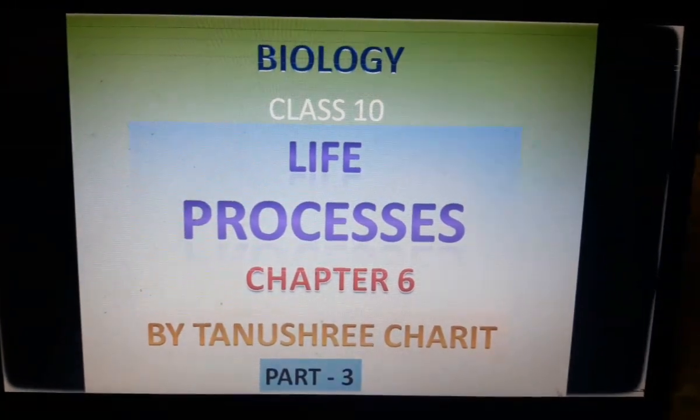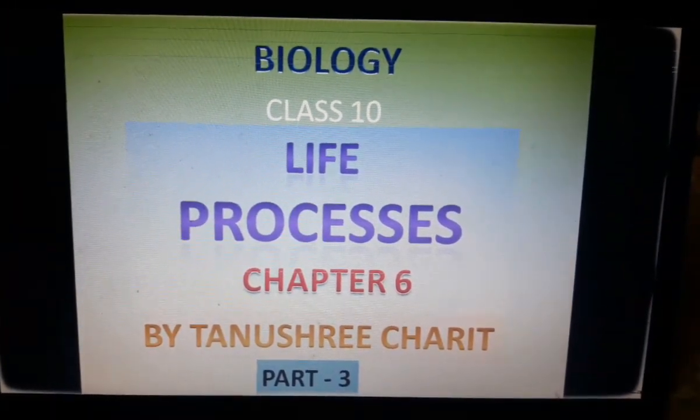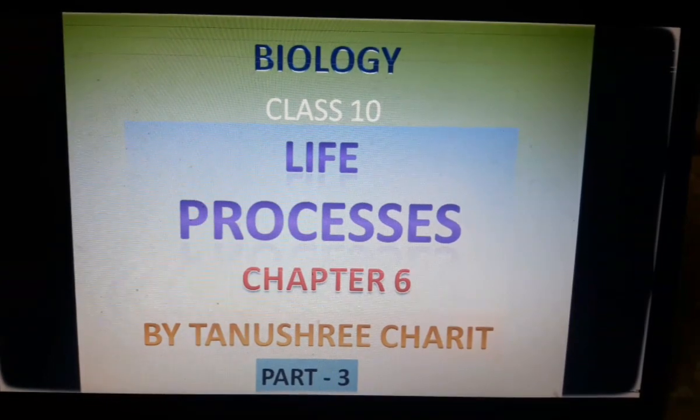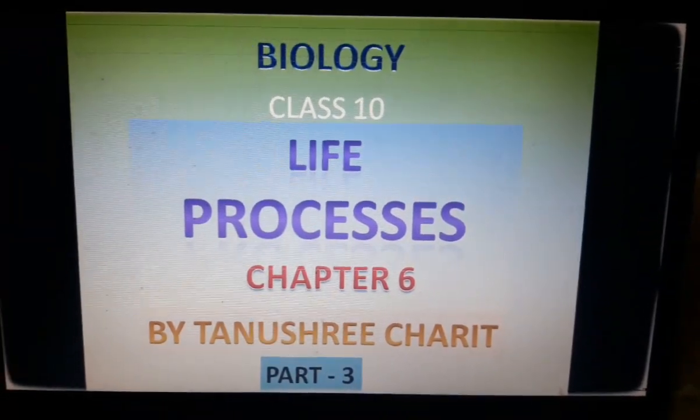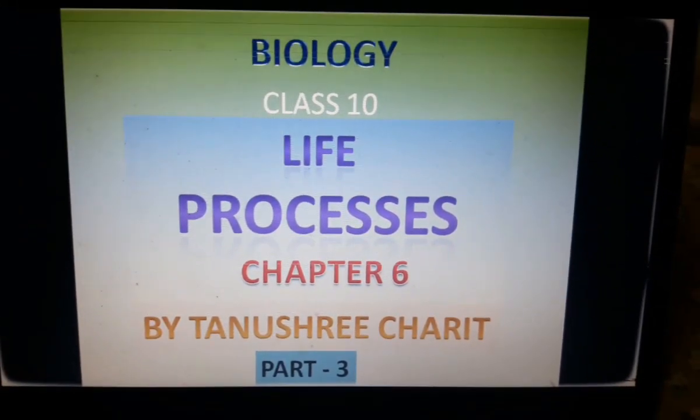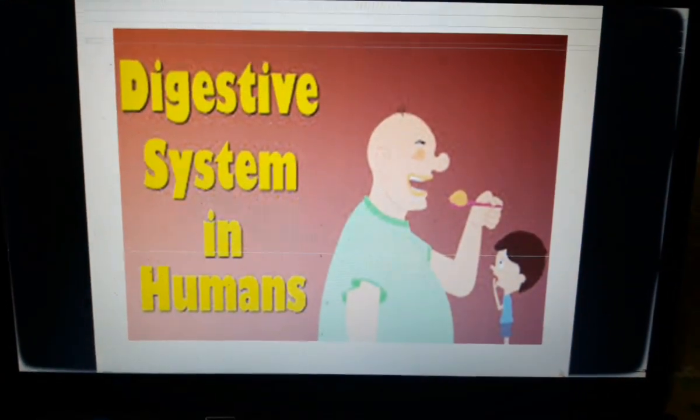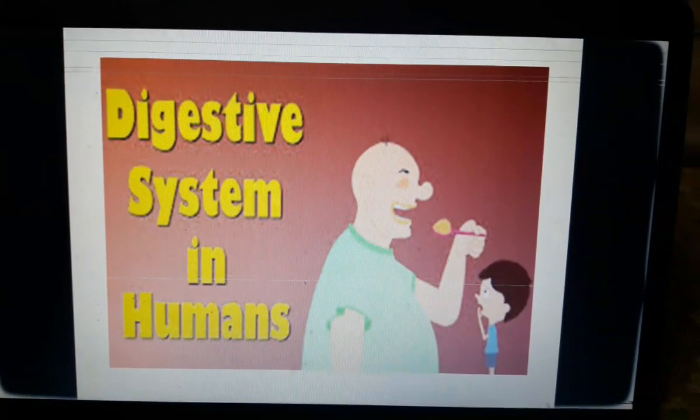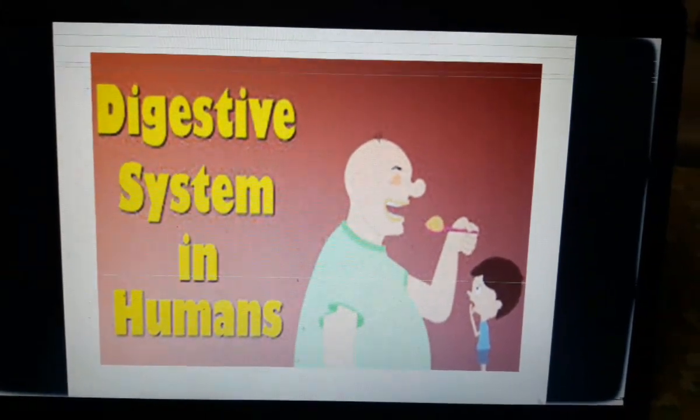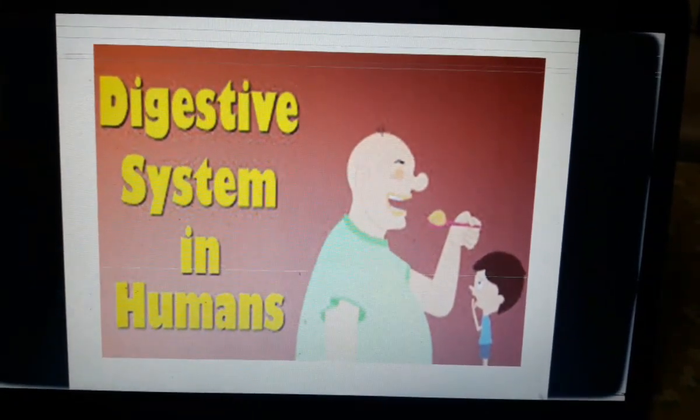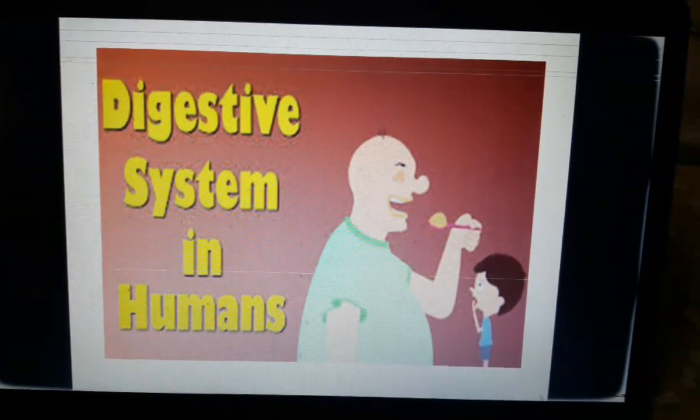Namashiva students, let's start digestion in human beings. Humans are omnivorous organisms. They have a well-developed digestive system like other multicellular animals. The complex food eaten by humans needs to be broken down into simpler forms before it reaches the cell.